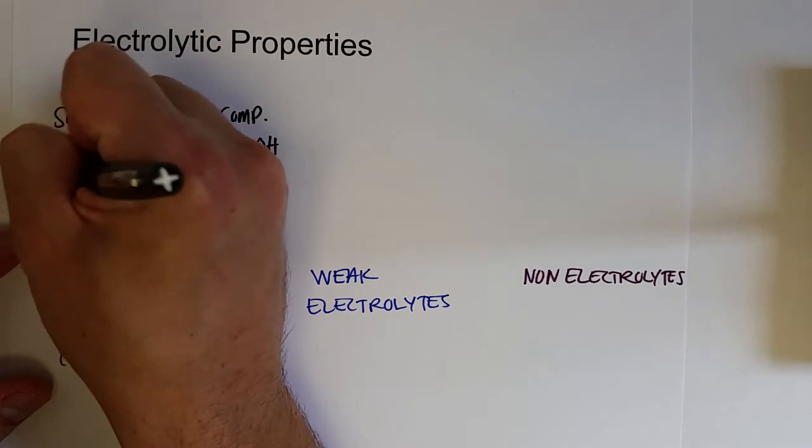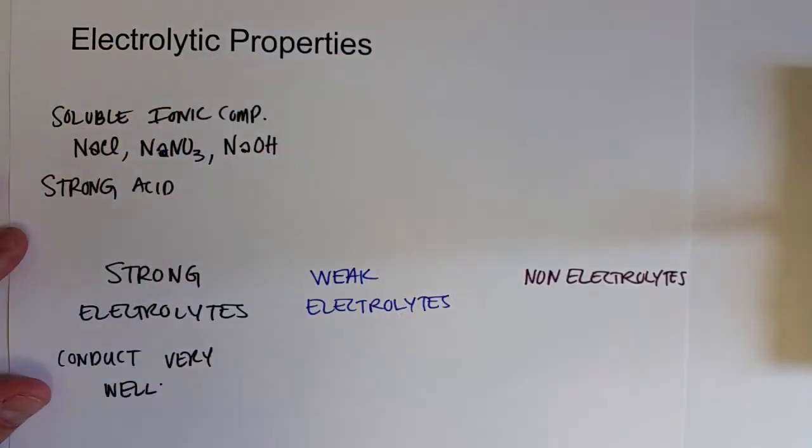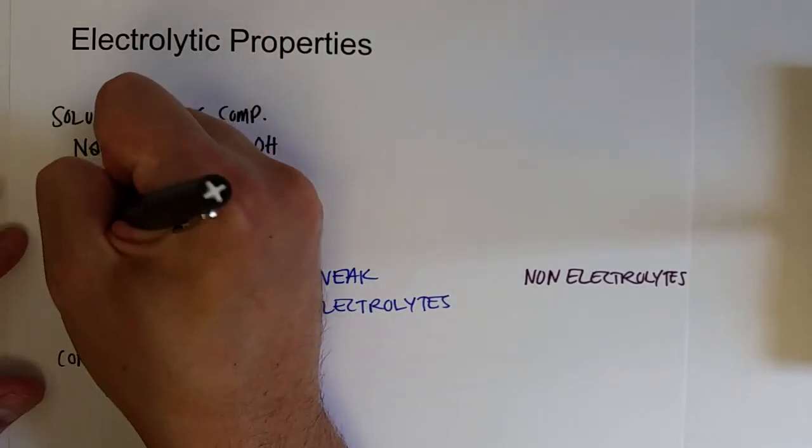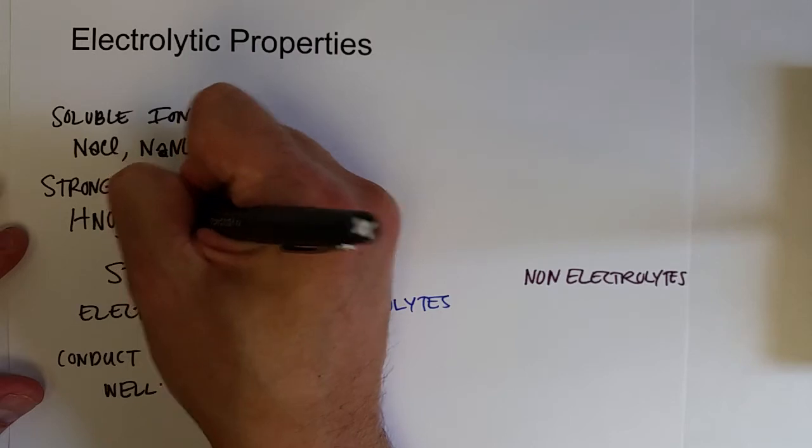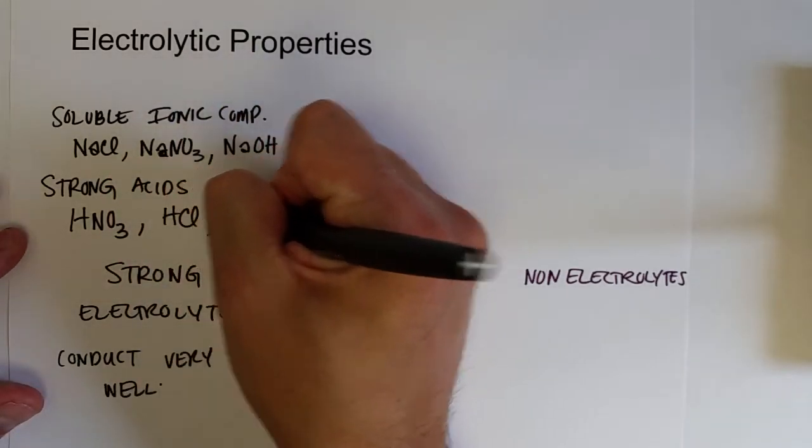And then the other type of strong electrolytes are strong acids that ionize 100% or donate 100% of their ion. And so those would be HNO3 like nitric acid, hydrochloric acid is another good example, or sulfuric acid, H2SO4.